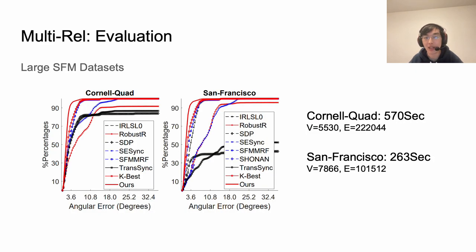In addition we also evaluate our method on large structure from motion datasets, which is a more standard task. We use Cornell Quad and San Francisco for this evaluation. We see that over tens of thousands of images as input, it takes our method only several minutes to recover the global poses, which is comparative to the baseline method.